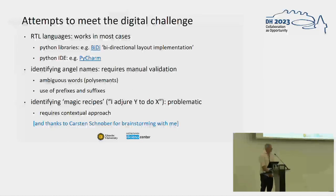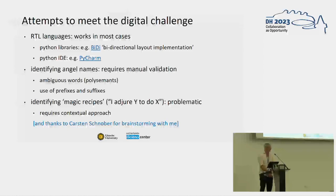Identifying these angel names, as my colleague already explained, is very problematic in many ways. One of the things is that many of the words are ambiguous — they're polysemous, they can mean different things. So you really require a manual validation unless you're able to throw some very heavy machine learning at it, which I tried, but it doesn't really work. And the use of prefixes and suffixes varies — in some cases it means something, in other cases it doesn't — so that requires also a manual correction of the words in their context. That applies even more to magic recipes where you need this contextual approach.